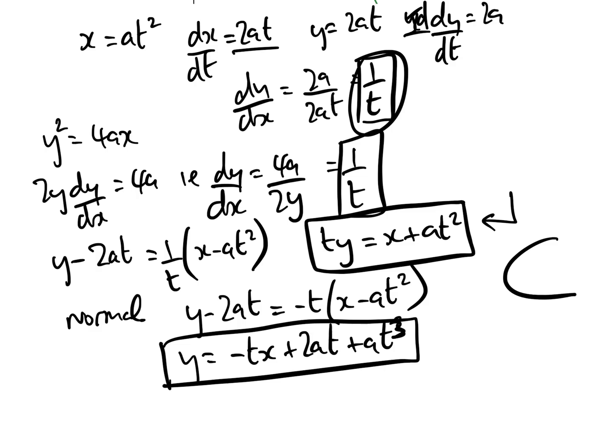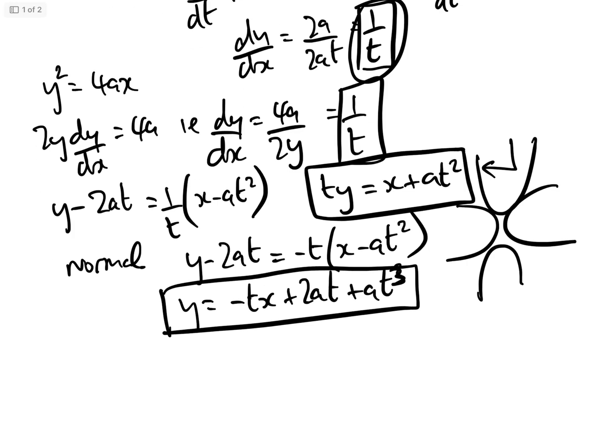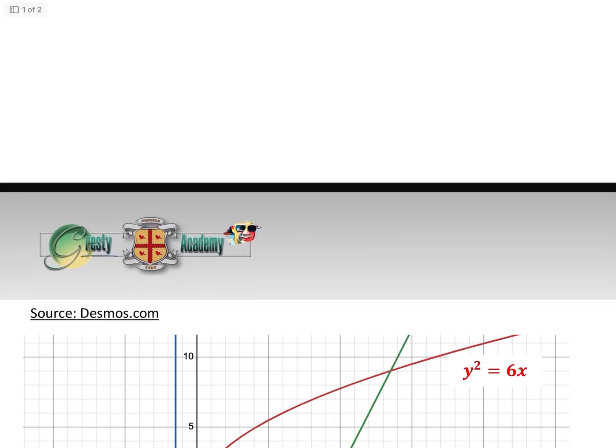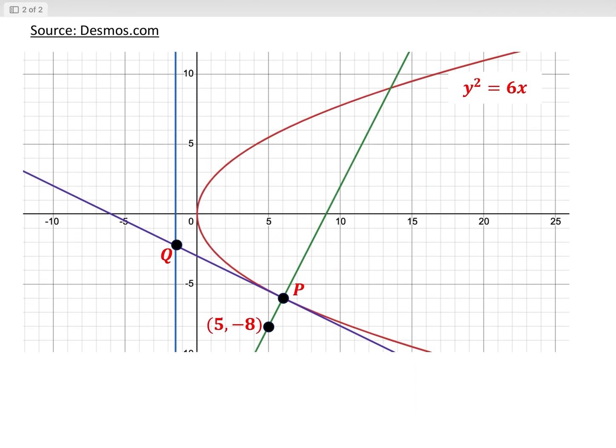You can remember these formulas if you want, but you'd have to remember them for right-opening, left-opening, upward, and downward parabolas. I find it much easier to just differentiate and find the equation from there. Now let's go back to the question at hand — I've redrawn it using Desmos.